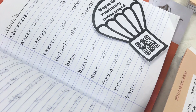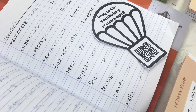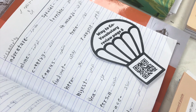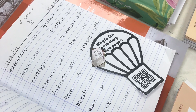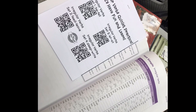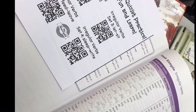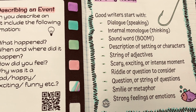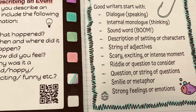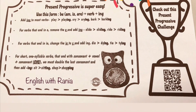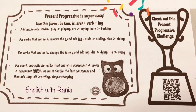Here are some examples of how I use QR codes in my class. This is an example of a QR code that links to a Quizlet set for reviewing vocabulary that students paste on their notebook. Here's a different example of practicing irregular verbs using Quizlet sets — students simply scan these codes and start practicing in order to remember the verbs better. And this QR code links to a video about describing an event, and this one links to a video for the Present Progressive Challenge. You see, there are many options.